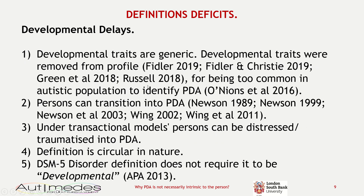There are other issues: mental traits described as PDA in early infancy are generic — common in all humans. It's also been noted that the neonatal features were removed from the PDA profile because they were too common in the autistic population, making them not useful for identifying PDA as an autism subtype. It's also been noted by clinicians including Newson and Lorna Wing that people can transition into PDA, and also under transactional models of PDA, people are going to be distressed or traumatised into PDA. The definition used by Phil Christie is also circular in nature.